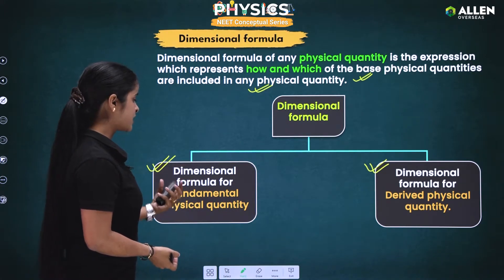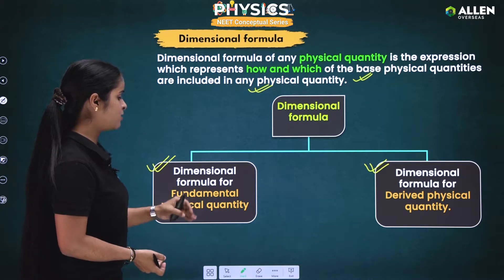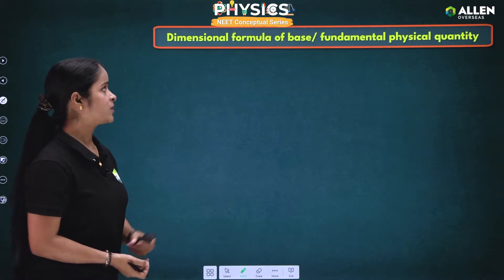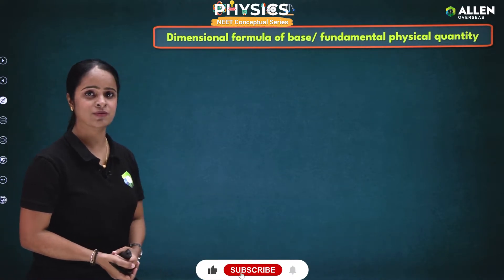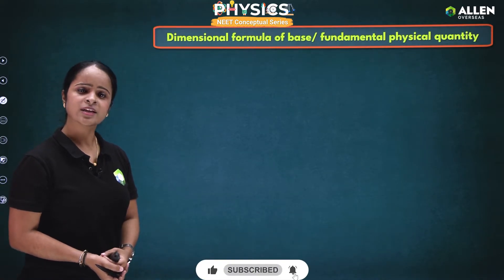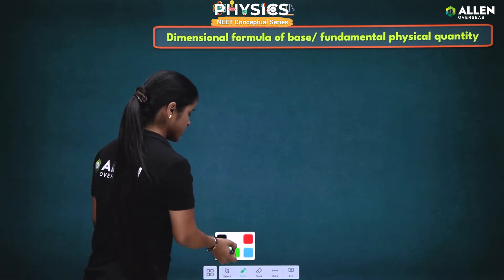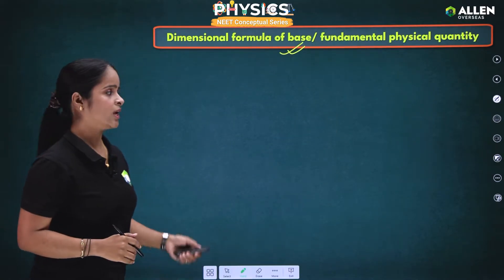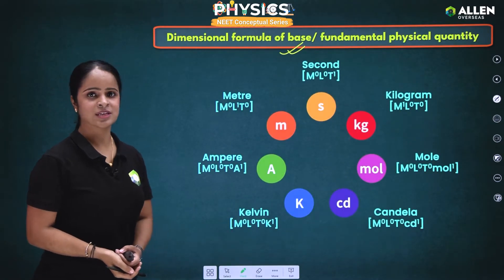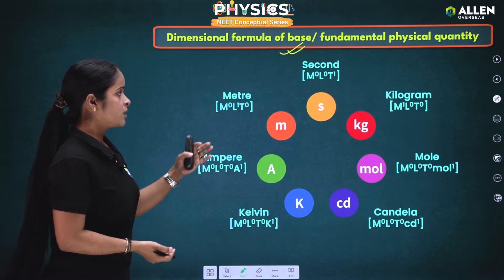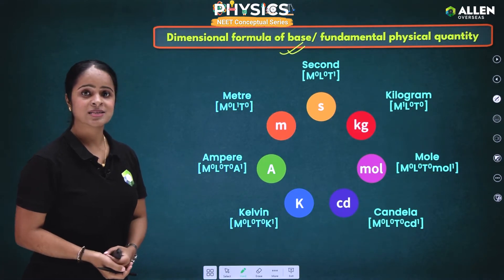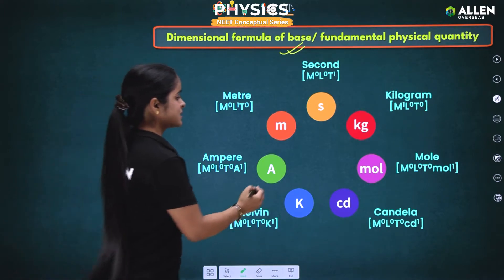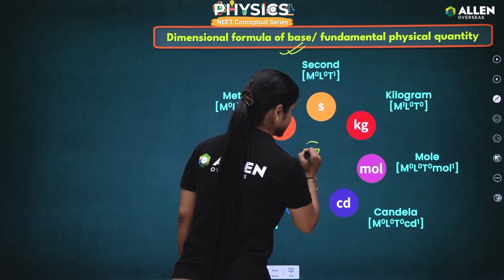Let's understand dimensional formula of fundamental physical quantity. The dimensional formula of base or fundamental physical quantity — you should know what base or fundamental physical quantities are. I have listed the dimensional formula as well as SI unit of seven fundamental physical quantities.